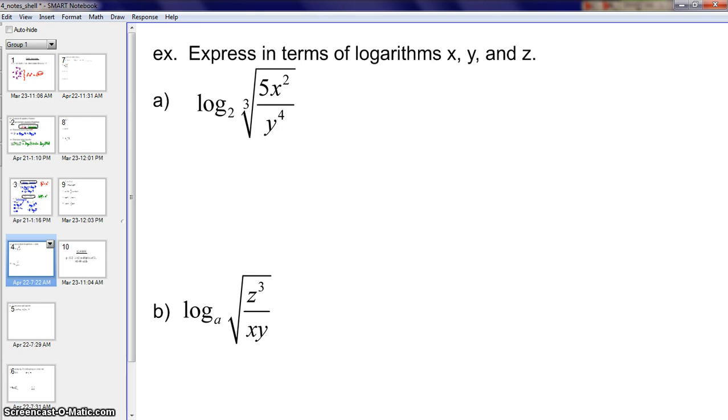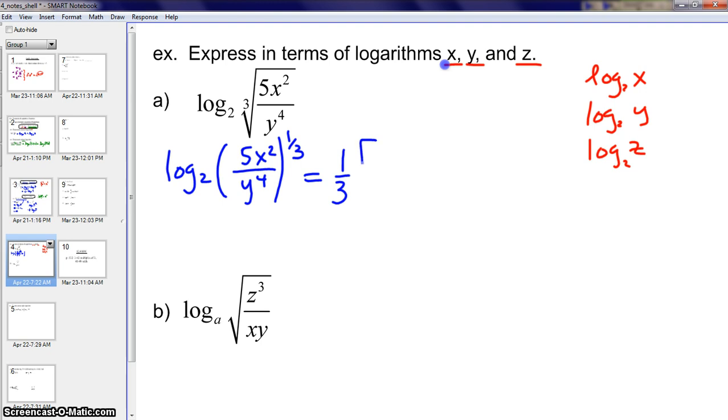So the directions here say express in terms of logarithms of x, y, and z. So we want log of x, log of y, log of z. We want those things to be in our final statement. And since these are all going to be base 2, I'll even remind myself of that. Because it's a base 2 log in the question. These are sometimes referred to as expansion problems. We're trying to spread out this expression to be long and simple. Each chunk is simple. So I would start out by rewriting that cube root as an exponent.